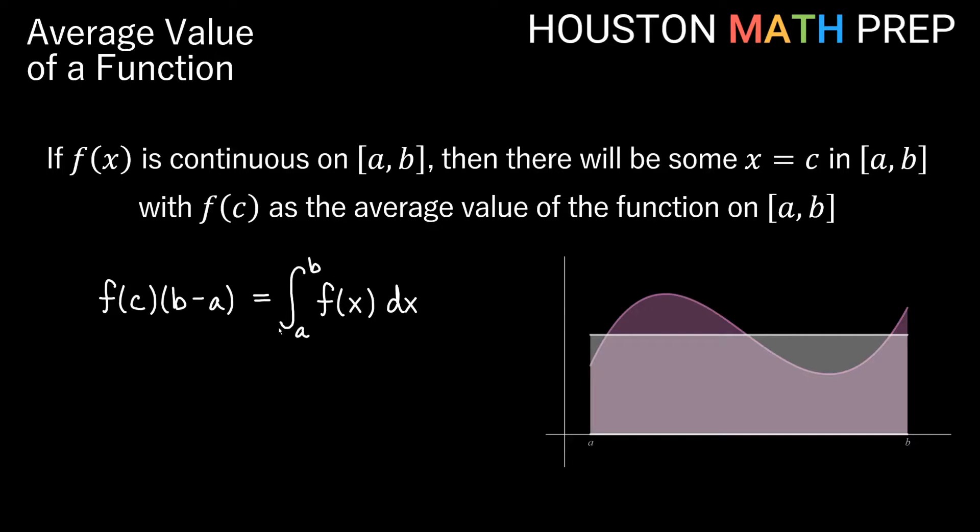So my rectangle I've constructed here and my definite integral are the same value. So let's see if we can figure out a formula for this f(c), this average value. I think it's pretty easy to solve this equation for f(c). We'd just divide both sides by b minus a, and our formula for the average value of a function is going to be 1 over b minus a times our definite integral a to b of f(x)dx.